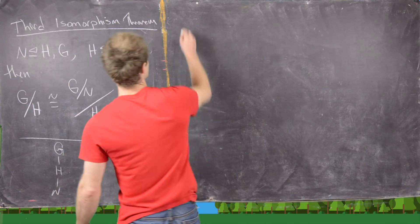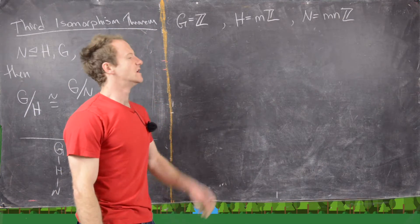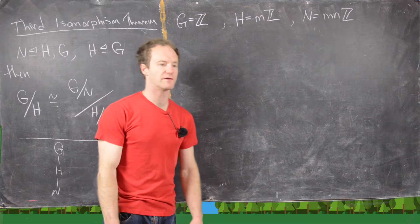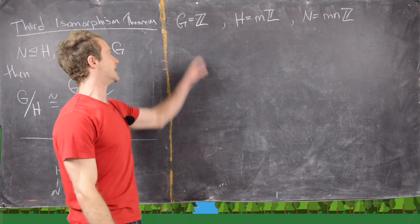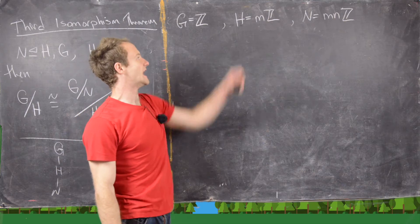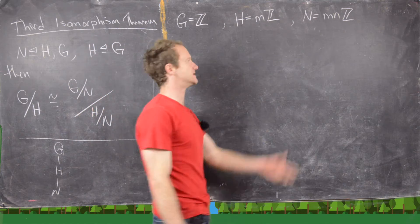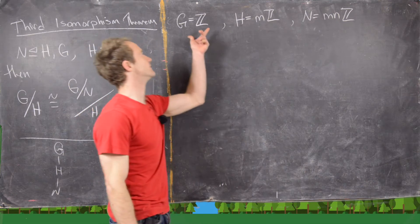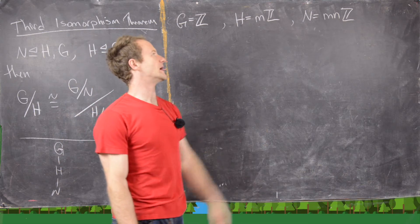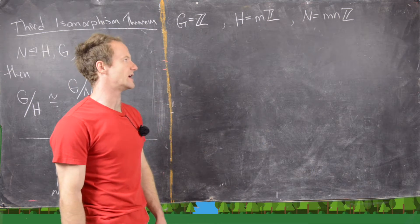So let's look at an example. The example we're going to work with is one of the simplest but also one of the most useful and illuminating. We'll take our large group to be G = Z, and then H is going to be mZ. We know every subgroup of Z is of the form mZ — in other words, this is a cyclic subgroup generated by M.